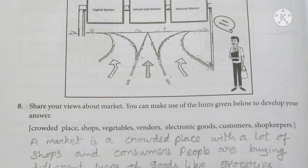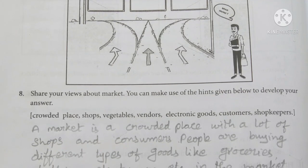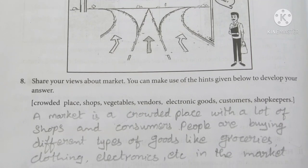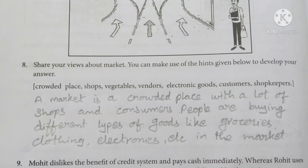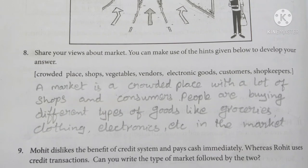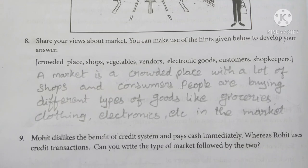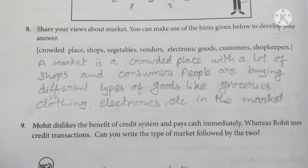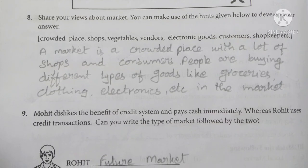Share your views about market. You can make use of the hints given below to develop your answer. A market is a crowded place with a lot of shops and consumers. People are buying different types of goods like groceries, clothing, electronics, etc. in the market.